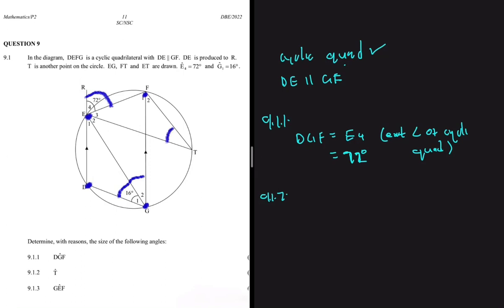It has nothing to do with the cyclic quad, so we cannot use a cyclic quad. And then it has nothing to do with these two parallel lines here, so there's no way you can use that too.